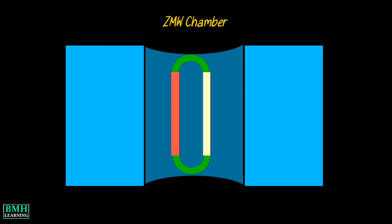Sequencing is performed in the ZMW chamber. DNA polymerase is attached at the bottom of the ZMW chamber. Universal primer binding site and initiation sequence are present in adapters. They allow the start of sequencing.